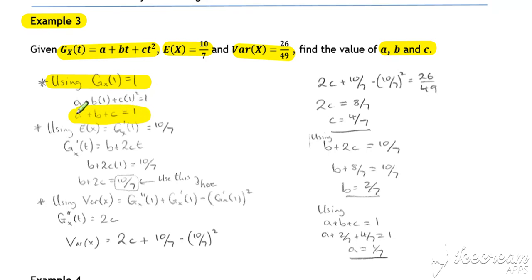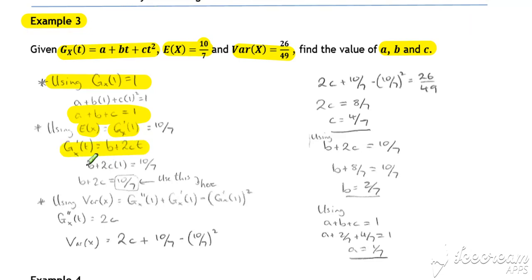For our second equation, we know that the expected value of X equals G'_X(1), and we know that's equal to 10/7. So if we differentiate the PGF and set it equal to 10/7, that gives us our second equation, this time involving just b and c.